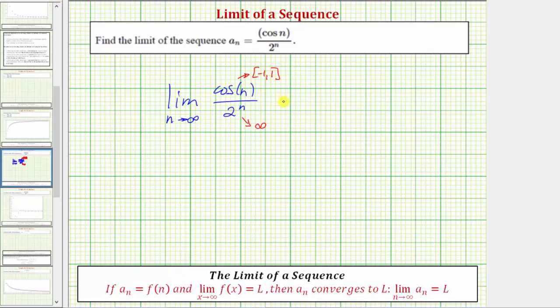And therefore this limit is equal to zero, which means the sequence a sub n converges to zero. This means as we use this formula to generate more and more terms in the sequence, the value of the terms will approach zero.